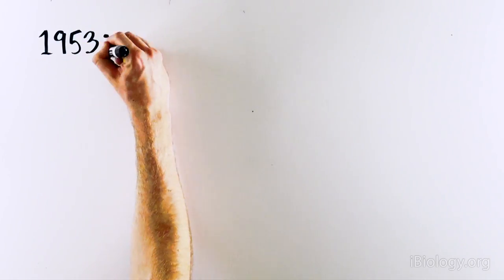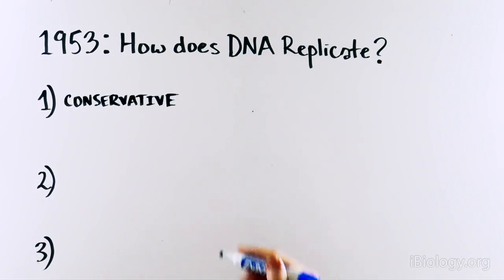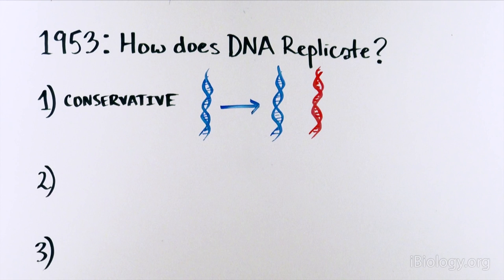In 1953, the question lingered. How does DNA replicate? There were a few theories. Three, actually. One of them was conservative replication, where a DNA molecule would get copied and make a second, new red DNA molecule.